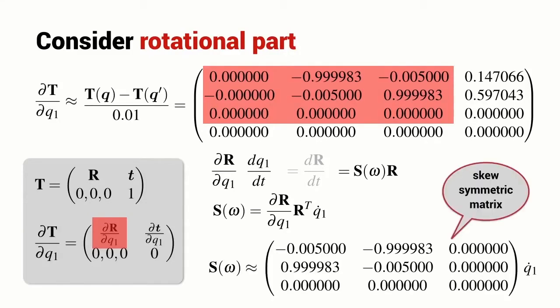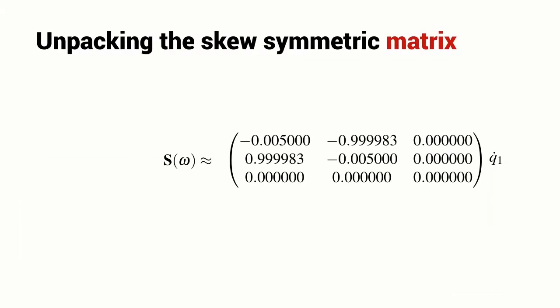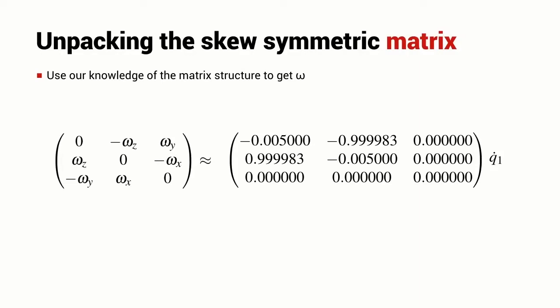We can compute this numerically and we end up with this matrix which should be a skew symmetric matrix. Let's have a look at it in a bit more detail. We know that a skew symmetric matrix has got a form something like this. So let's check whether this is a skew symmetric matrix and if it is, what are the values of the angular velocity.